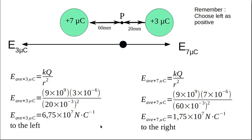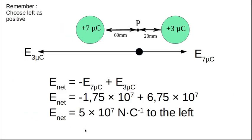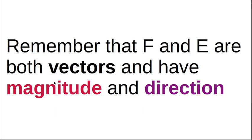I've got a force to the left and a force to the right, and the force to the left is bigger, so we take the vector sum. The net electrical field at point P: add the two together, changing the sign of the 7 microcoulomb field since it goes to the right. You end up with 5×10⁷ N/C to the left. The 3 microcoulomb charge is really close to P, so it shoves the positive charge more strongly to the left. Remember, F and E are both vectors with magnitude and direction.